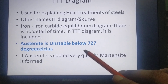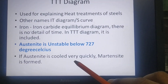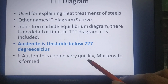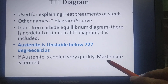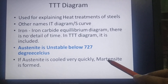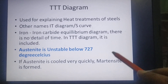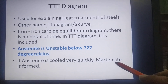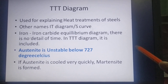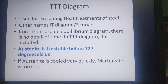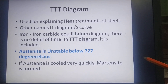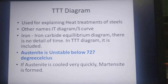Another point: if austenite is cooled very quickly, as in the hardening process, martensite is formed. At what time the martensite formation starts and at what time it ends is also recorded in the TTT diagram. Let us see how it is recorded.